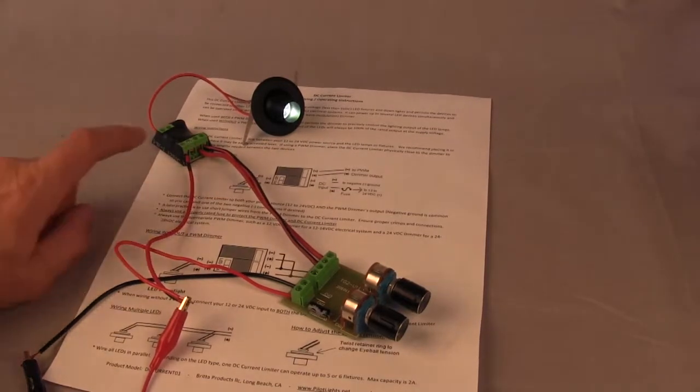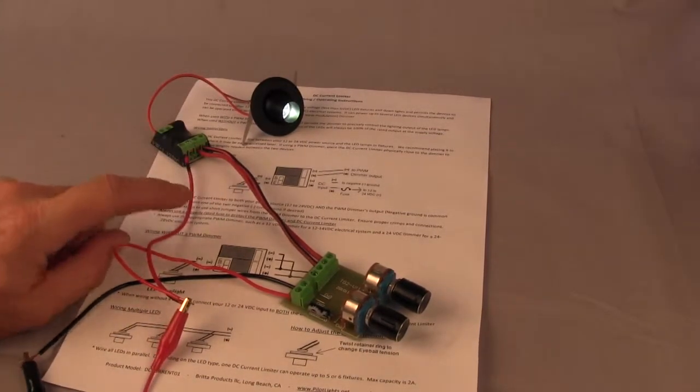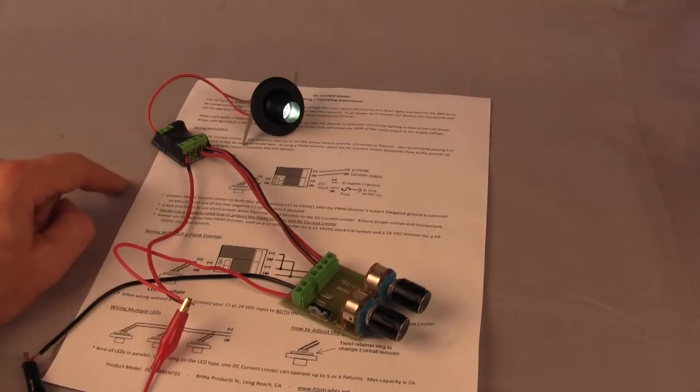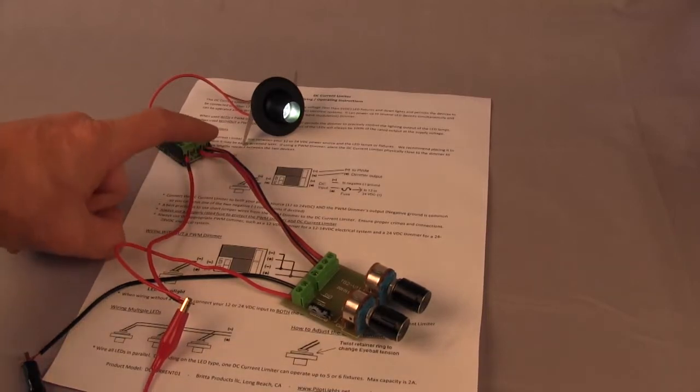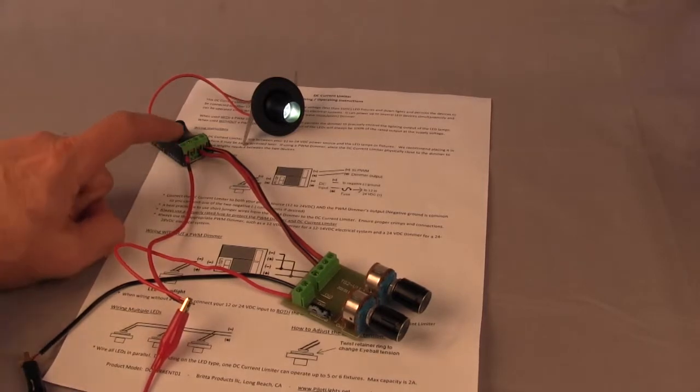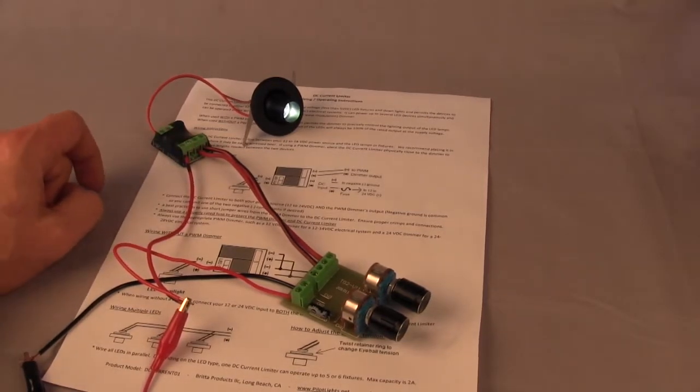It's basically that simple. Always connect the current limiter between your lamp and your power source. You can connect to either 12 or 24 volts. And if you're not using a dimmer, you need to connect both sides to both positive and negative. When you are using a dimmer, you can connect it like you see here.